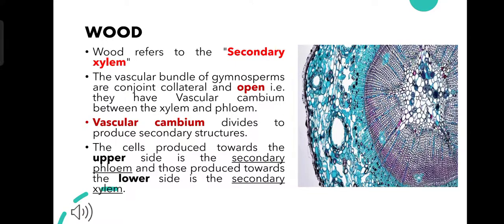Now let us see about the wood. Wood generally refers to secondary xylem. The vascular bundle of gymnosperms are conjoined, collateral and open, which means they have a vascular cambium which is meristematic in nature and divides to produce secondary structures. It is present between the xylem and the phloem.